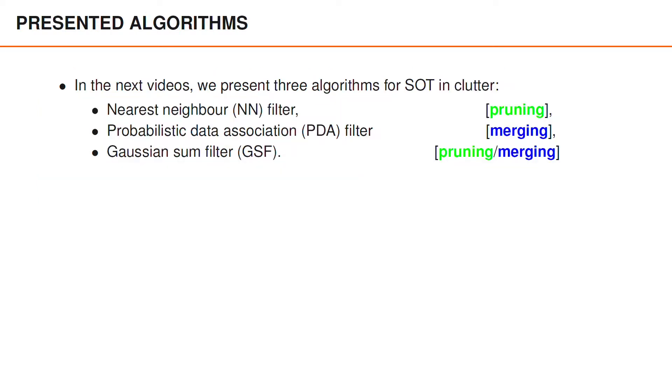In upcoming videos, we present three different single object tracking algorithms. First, the nearest neighbor algorithm that uses pruning. Second, the probabilistic data association or PDA filter that uses merging. And finally, the more general Gaussian sum filter, which often uses pruning, but that can also use merging.